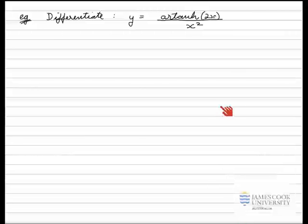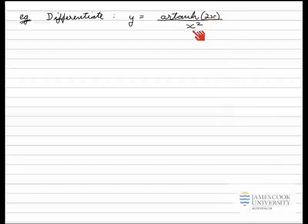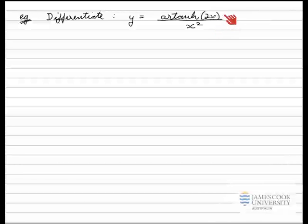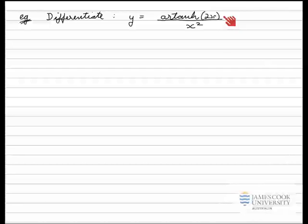In this example, we've been asked to differentiate the function artanh(2x) divided by x squared. Looking at this function, I realize it is a quotient, so I should be thinking about the quotient rule. I will let one function u equal the top line and v equal the denominator. The numerator is an inverse hyperbolic function, so I should think of the four-step method of how to differentiate inverse hyperbolic functions.